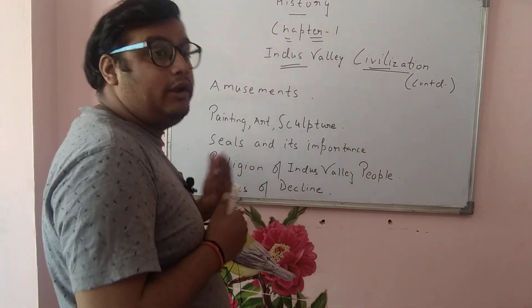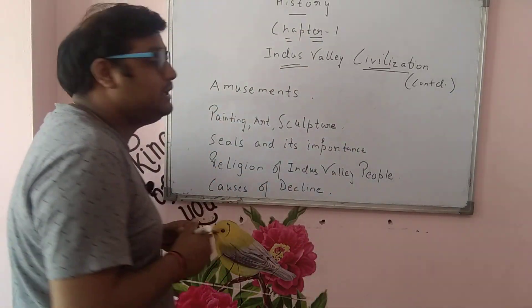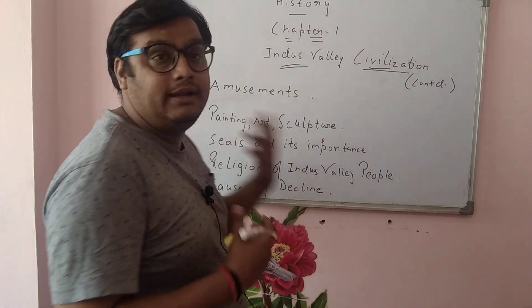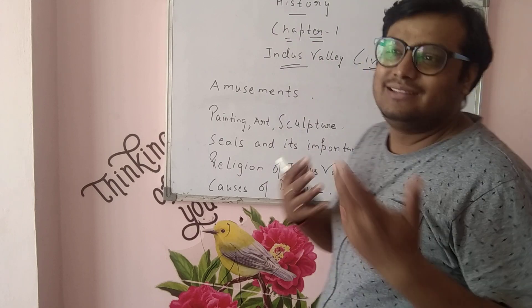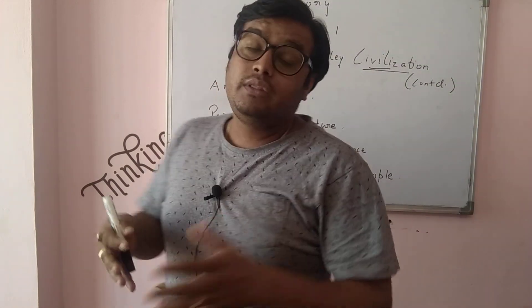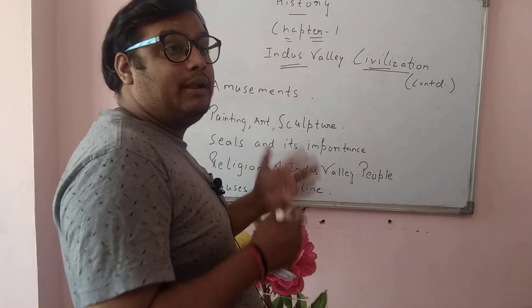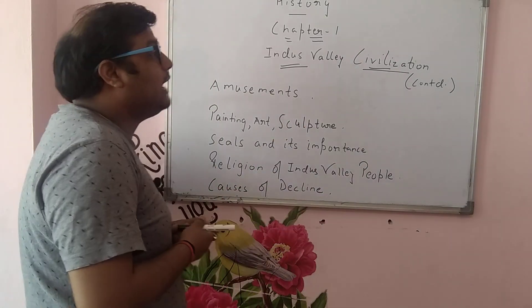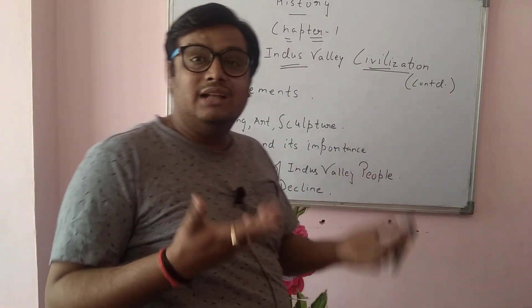Next is amusements. What do you understand by the term amusements? Amusements basically means things which they were doing for entertainment. There were no televisions, no internet at that time. Electricity was also not there. So what were they doing for entertainment? The basic things they were doing were having the form of dancing.